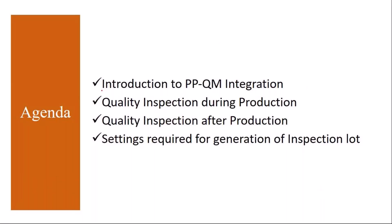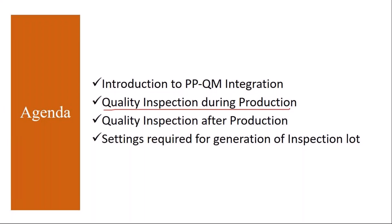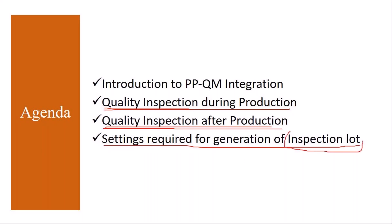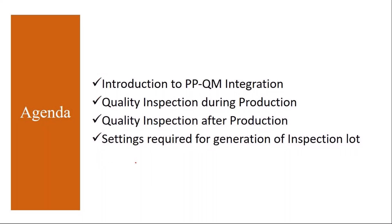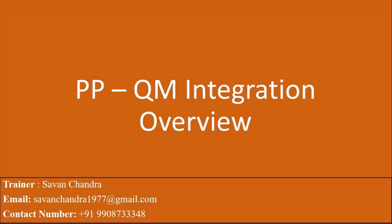We will cover quality inspection during production — when the production activity is ongoing, how the quality inspection is performed. Then quality inspection after production — once production is completed, how to do quality inspection on the produced product. We will also see the settings required for generation of an inspection lot, from the system point of view.